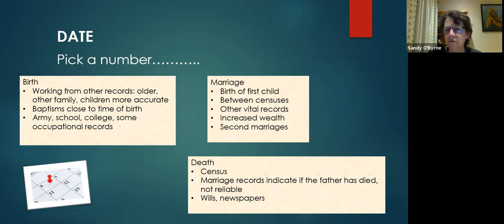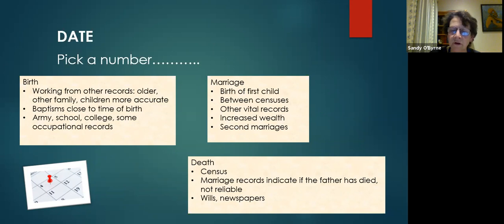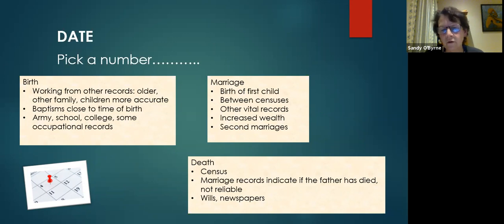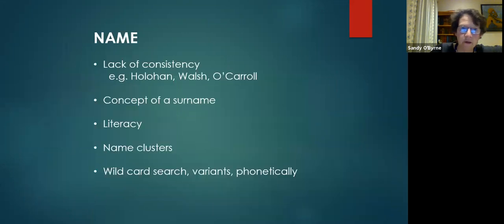Second marriages were often very close to the death of the previous spouse — a man might need someone to look after the children, and a woman often needed the support and protection of a man. If you find a girl in the 1901 census but not in 1911, it's a good likelihood she got married and her name changed. The marriage record indicates if a father is alive or dead — if it says he has died, that's probably accurate; if it says nothing, it doesn't mean he's still alive. Newspapers can be extremely helpful, particularly if somebody died in an accident or in war, as local newspapers included a lot of local news.